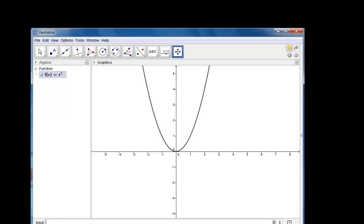Step number two, place point A on the graph of f of x equals x squared with the point button and click anywhere on this. It should highlight when it's selected and we'll create point A.